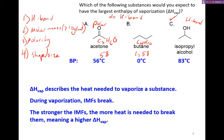So if we look at the boiling points, then it actually corroborates what we just said here. Isopropyl alcohol has the highest boiling point. Butane has the lowest. And that means that the enthalpies of vaporization are going to follow the same trend.